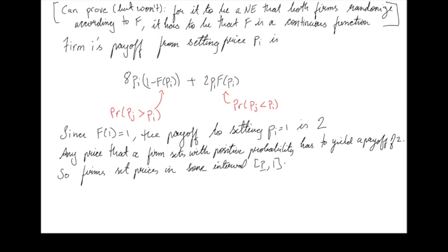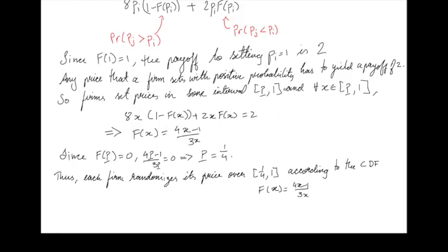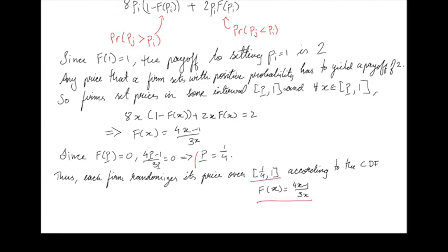So firms only set prices in some interval [p-bar, 1], and for each price in this interval the payoff must equal 2. That means for every x in [p-bar, 1]: 8x*(1 - f(x)) + 2x*f(x) = 2. Solving for f(x) gives f(x) = (4x - 1) / (3x). Since no firm sets a price below p-bar, f(p-bar) = 0. Plugging in: (4*p-bar - 1) / (3*p-bar) = 0, so p-bar = 1/4. Each firm randomizes its price over the interval [1/4, 1] according to the CDF f(x) = (4x - 1) / (3x). That is the symmetric Nash equilibrium.